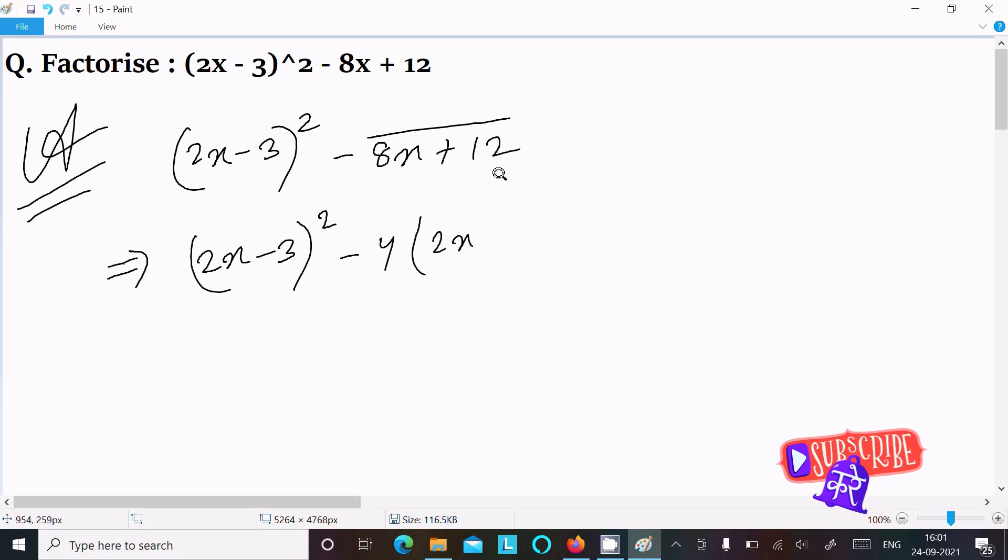Then here you can get 2x, and here, taking the common -4, this becomes minus, so plus changes to minus, and 3.